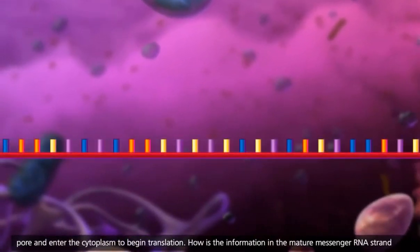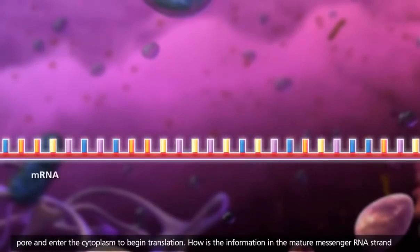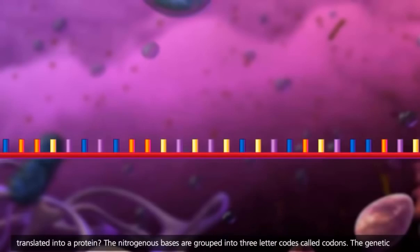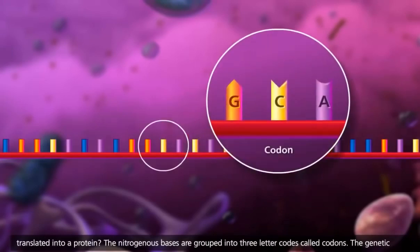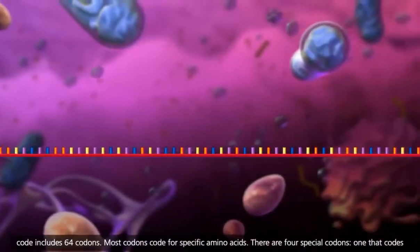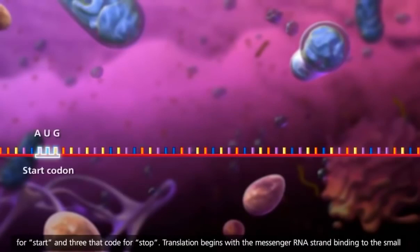How is the information in the mature messenger RNA strand translated into a protein? The nitrogenous bases are grouped into three-letter codes called codons. The genetic code includes 64 codons. Most codons code for specific amino acids. There are four special codons, one that codes for start and three that code for stop.